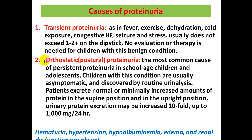The second type is orthostatic or postural proteinuria — the most common type of persistent proteinuria. It is the most common cause of persistent proteinuria in school-aged children and adolescents. Children with this condition are usually asymptomatic and discovered incidentally on routine urinalysis. Patients excrete normal or minimally increased protein in the supine position, but in the upright position, urinary protein excretion may increase tenfold, up to 1,000 mg per 24 hours.